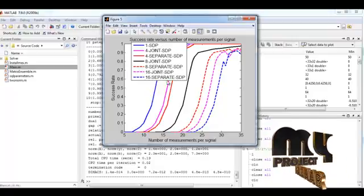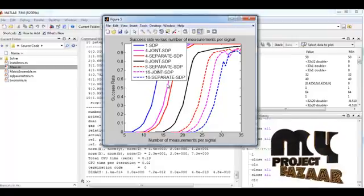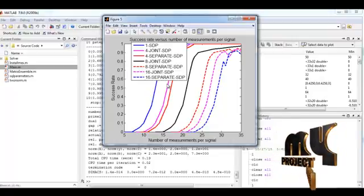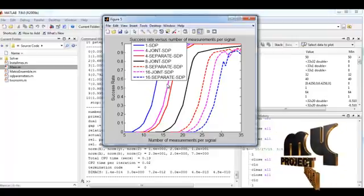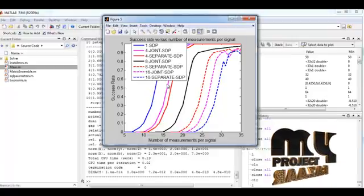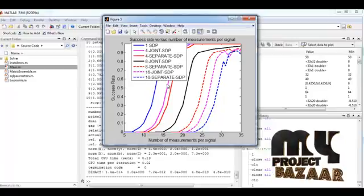The SDP proposes the CA norm minimization for recovering a JFS signal ensemble sharing a common frequency sparse component from the collection of their compressed measurements.